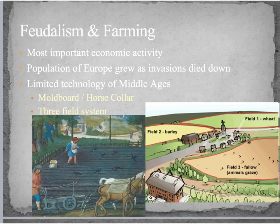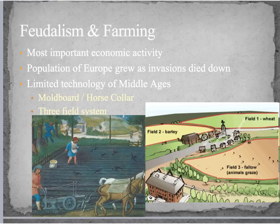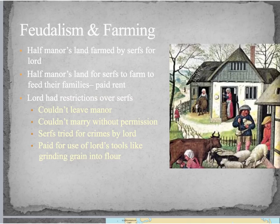Farming is by far the most important economic activity. As the invasions died down in the second half of the Middle Ages, the population of Europe started to grow. There were some new farming technologies: the moldboard plow, a new horse collar that allowed the horse to pull things without choking, and the three-field system of crop rotation, where fields were divided into three and one left fallow so nutrients in the soil could replenish. Half the manor's land was farmed by serfs for the lord (the labor part), and half was for serfs to farm to feed their families — but because they don't own that land, they had to pay rent to the lord in the form of crops.